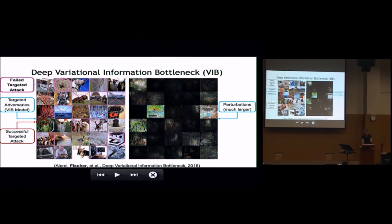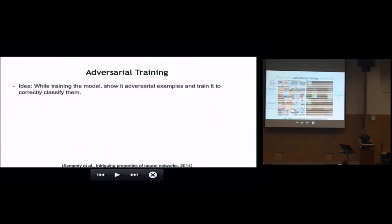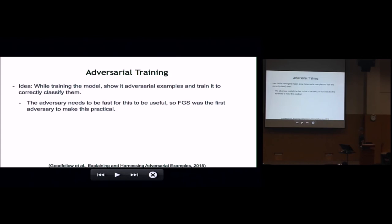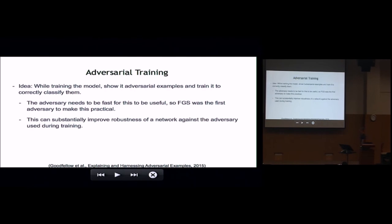So there's some hope that maybe we can be more robust to adversarial examples. Another really nice idea is adversarial training: while we train a particular model, we can just show it adversarial examples. We know what the true label should be because we generated the adversarial example, so let's just train the model on those examples with the correct label. The adversary really does need to be fast for this to be useful — we couldn't hope to run the optimization-based attack. Fast gradient sign was the first attack that made this really practical. This can substantially improve the robustness of a network against the adversary used during training.